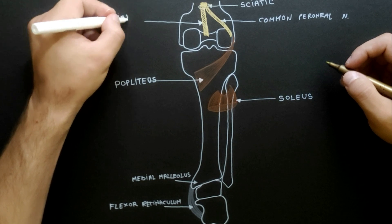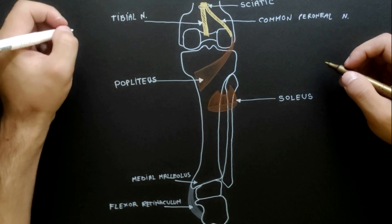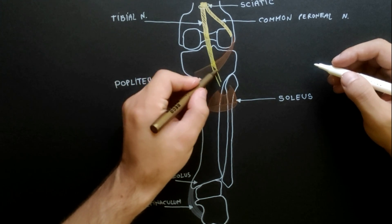The tibial nerve is the larger terminal branch of the sciatic nerve. While passing through the middle of popliteal fossa, the tibial nerve gives the following branches.